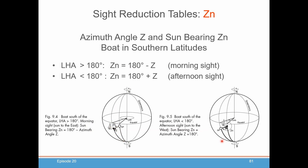For an afternoon sight in the southern hemisphere, the sun's over to your west and LHA is this little angle here. Here's our spherical triangle from your boat to the closest pole, which is the south pole, back to the sun, and back to your boat. The site reduction tables are going to give you this little angle Z within the spherical triangle. What you really want is the angle from north, which is the big angle. So in order to get that, you need to take 180 plus Z to give you your Zn. That's where that formula comes from.